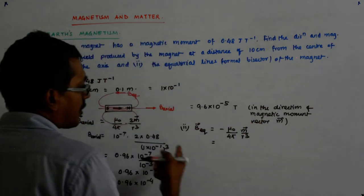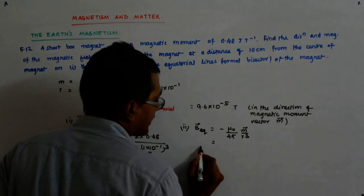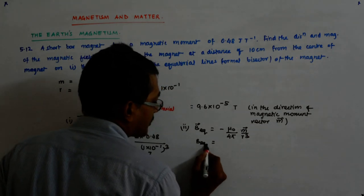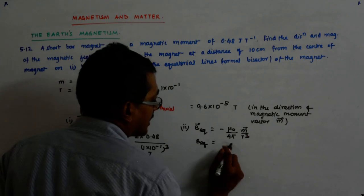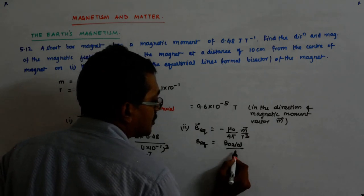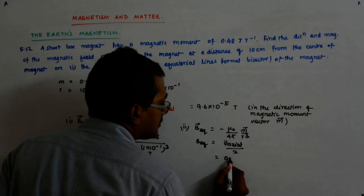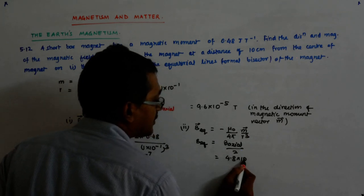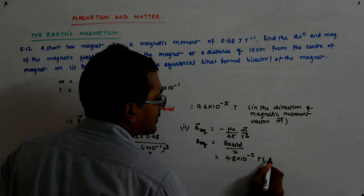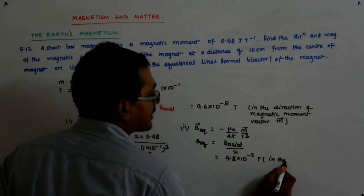So I need not even calculate the magnitude. Wise it is B equatorial is half of that, so it straight away becomes this is B axial by 2, so that is 4.8 into 10 to the power minus 5 Tesla in the direction.